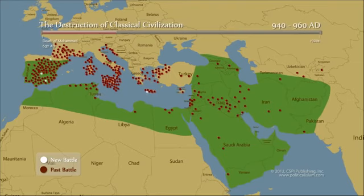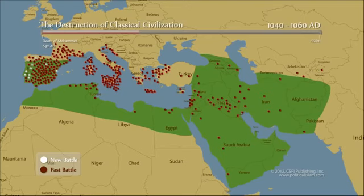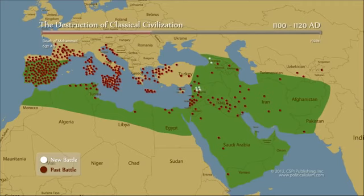One of the things happening with these invasions of the islands and coastlines is that one million Europeans were captured and taken into slavery. Think about that. This is not a history that most people like to think about, or even know.